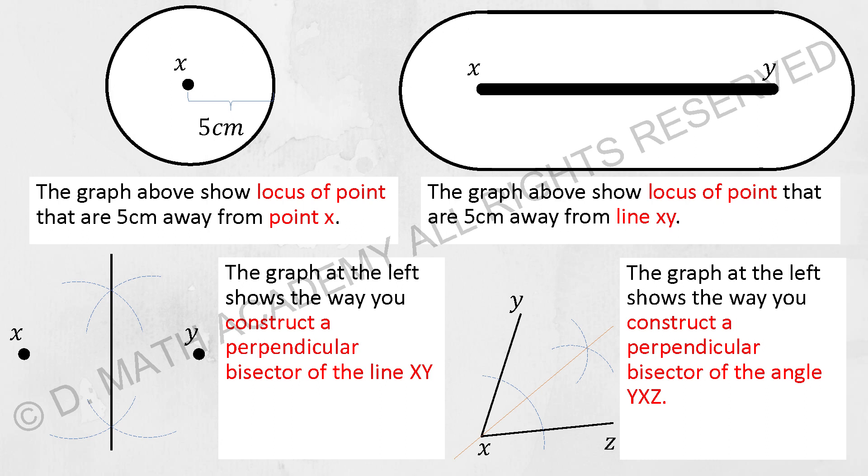The graph above shows a locus of points that are 5cm from point X. If they mention a point and they want 5cm away from it, just basically put it on your compass, measure it for 5cm first, then you just draw a circle over there.